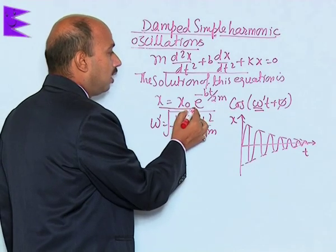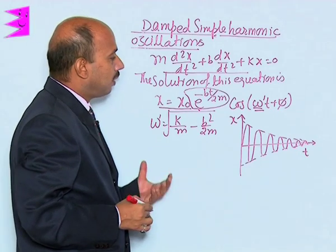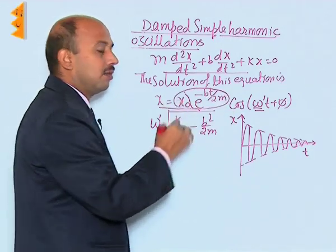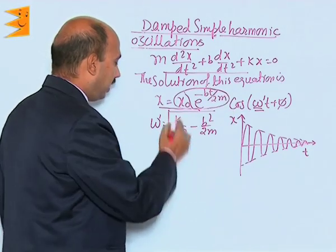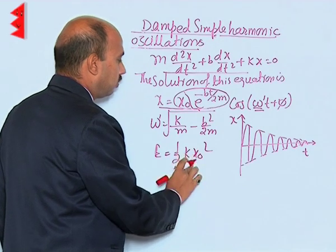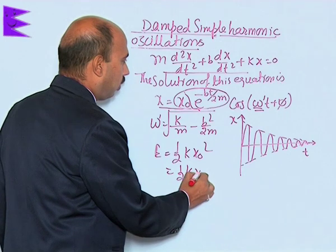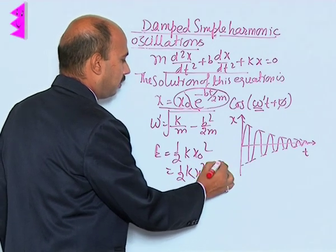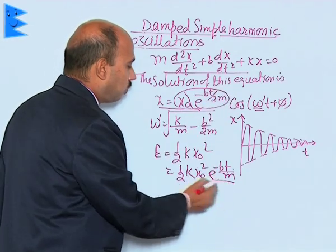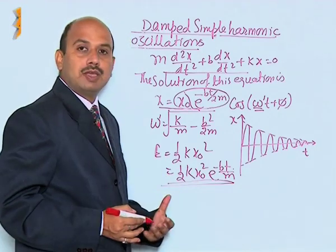The amplitude portion of the solution is x-naught times e raised to the power (minus bt over 2M), which can be taken as the effective amplitude. The energy is then half k times (x-naught)² times e raised to the power (minus bt over M) — the 2 cancels due to squaring. This is the total energy of the body whose amplitude keeps on decreasing.